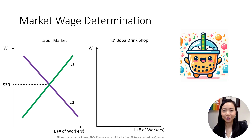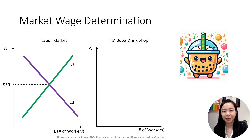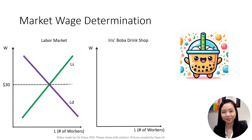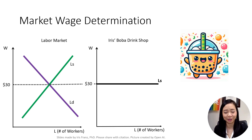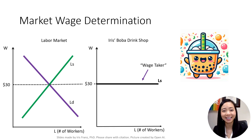After the equilibrium wage is determined in the labor market, my firm, Iris's Boba Drink Shop, will take the wage as given at $30. Although the market labor supply curve is positively sloped, as a wage taker, my firm is facing a perfectly elastic horizontal labor supply curve.